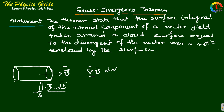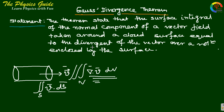The divergence del dot V times dv gives the net outflow of liquid through a small volume element dv. Summing over all volume elements gives the total net outflow, and this relationship is exactly Gauss's divergence theorem. This equation holds for a vector V and an incompressible fluid.